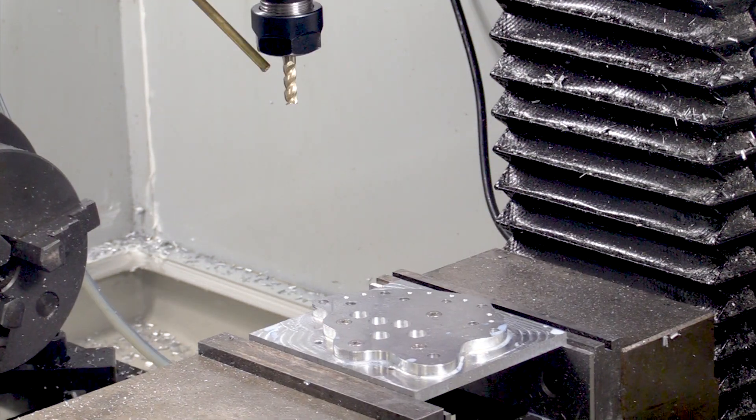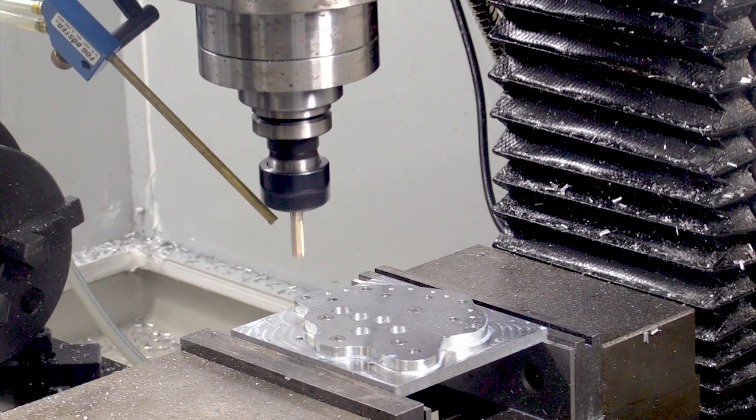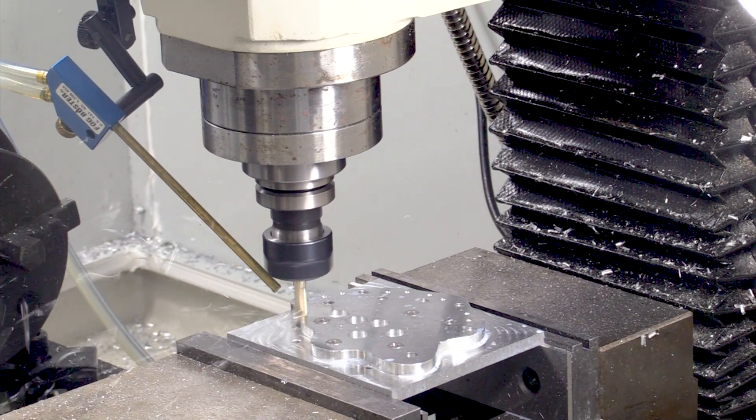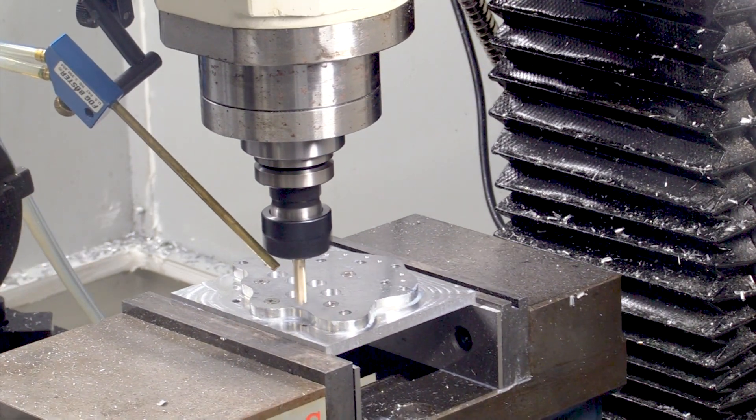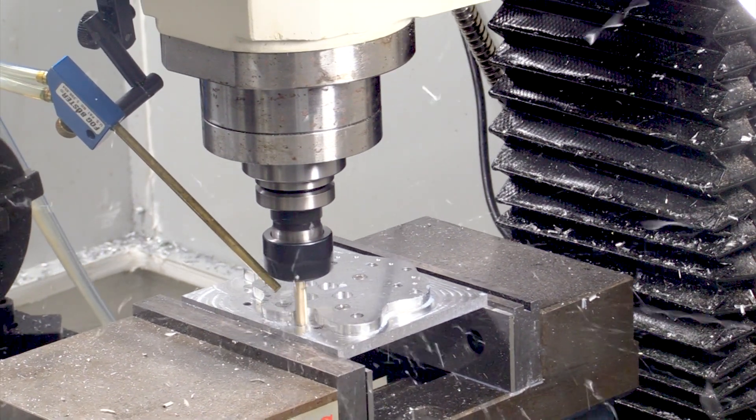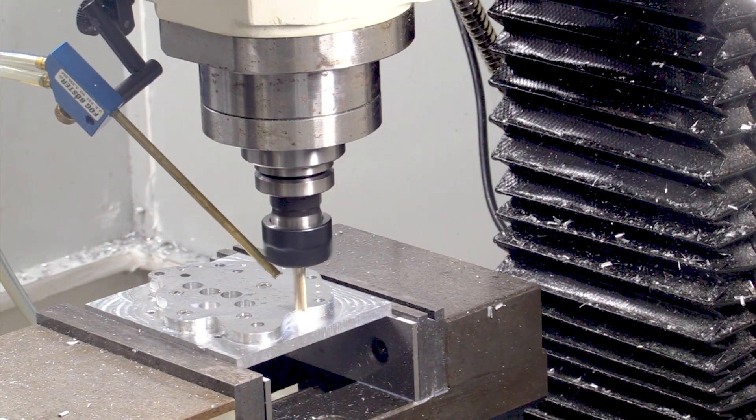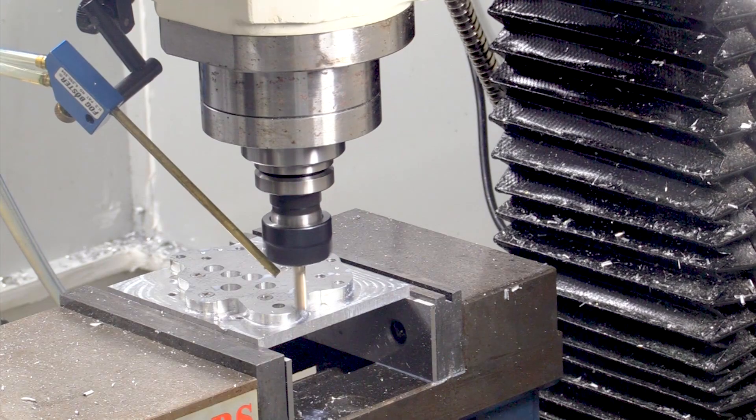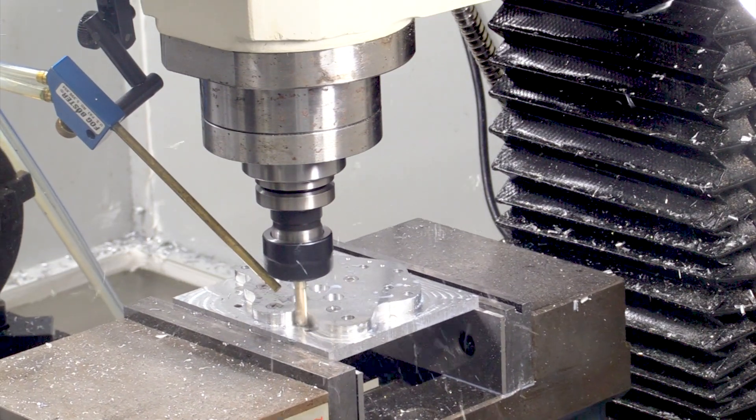And now I switch to a smaller quarter inch end mill to reach into the places where the three-quarter inch tool couldn't reach. And then I make a finished pass around the part.